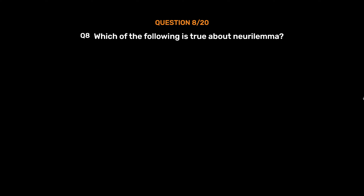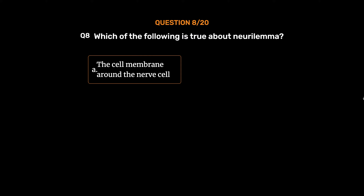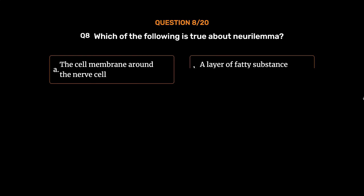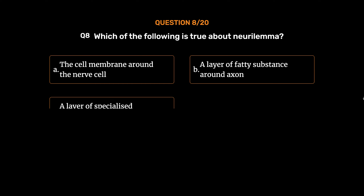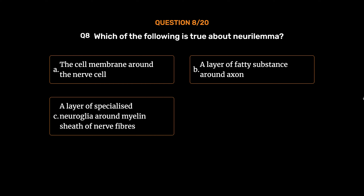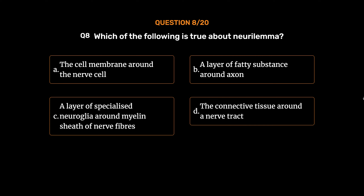Question number 8. Which of the following is true about neurilemma? Option A: The cell membrane around the nerve cell. Option B: A layer of fatty substance around axon. Option C: A layer of specialized neuroglia around myelin sheath of nerve fibers. Option D: The connective tissue around a nerve tract. The correct answer is Option C: A layer of specialized neuroglia around myelin sheath of nerve fibers.